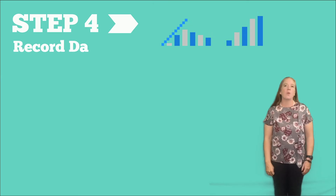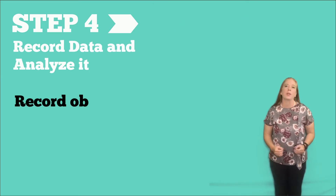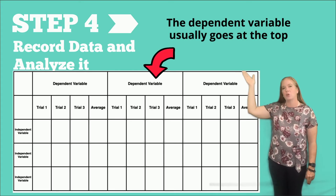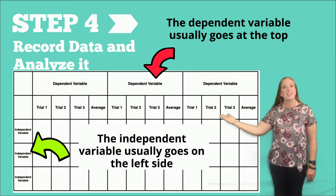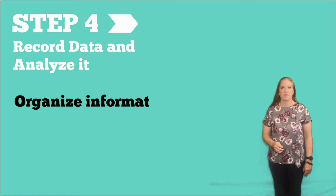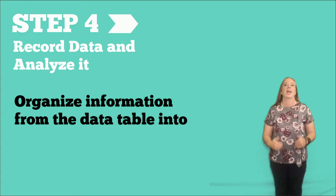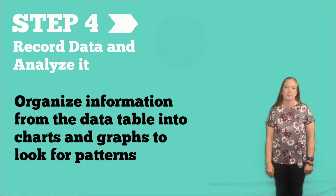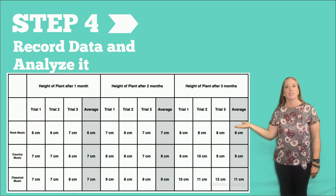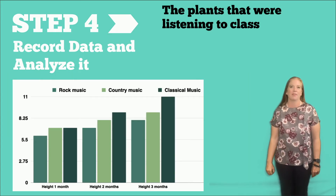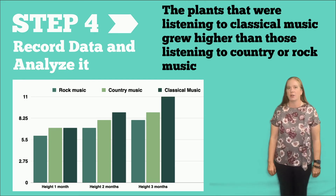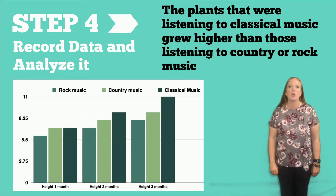Step four: record data and analyze it. This is where you'll want to record your observations onto data tables. Usually the dependent variable goes on top of the data table, and the independent variable goes on the side. You'll then want to organize the information from that data table into charts and graphs, and look for patterns. Here's the data table of the information collected from the different types of music and the graph. As you can see, plants that listen to classical music grew higher than plants that listen to country or rock music.